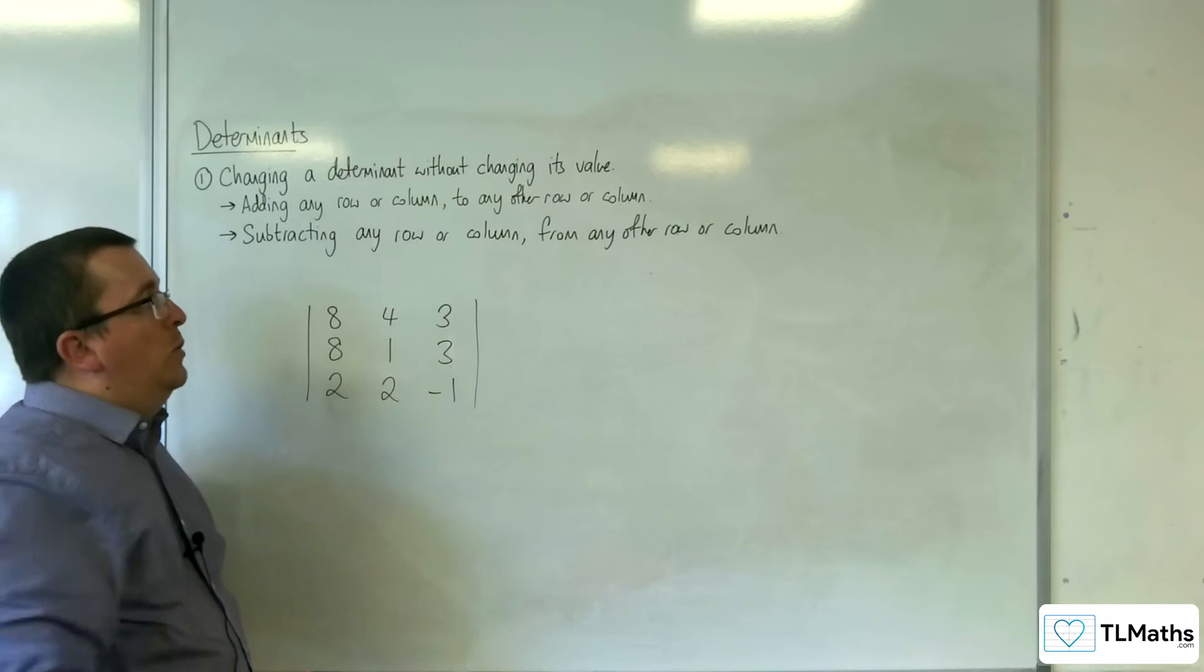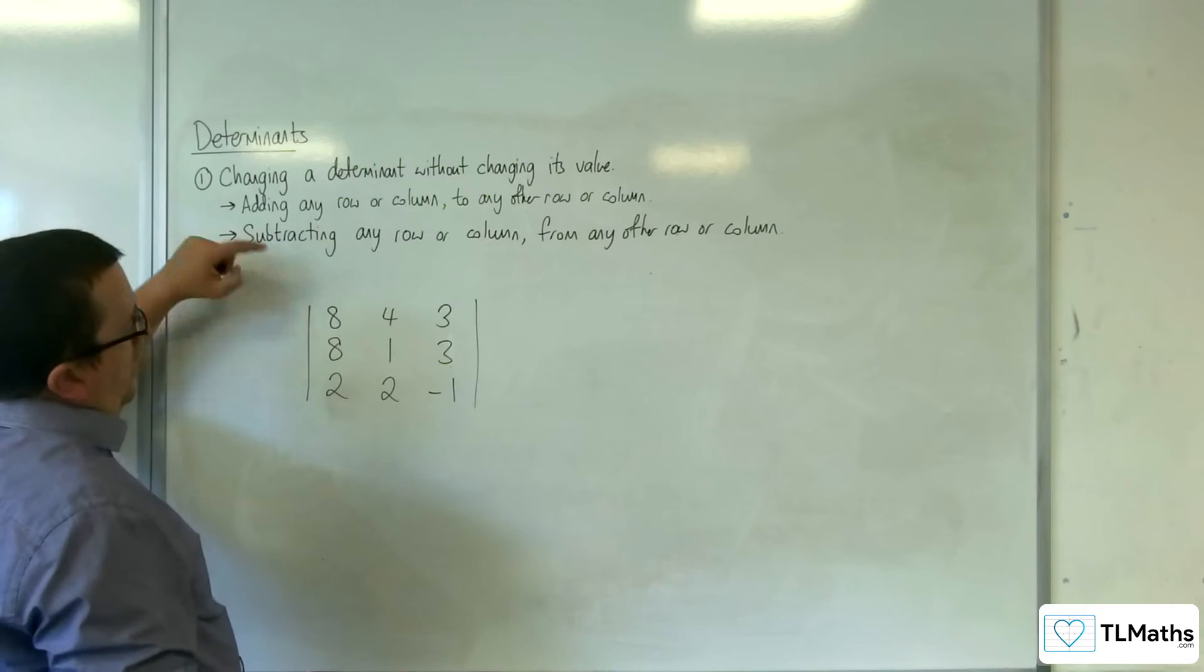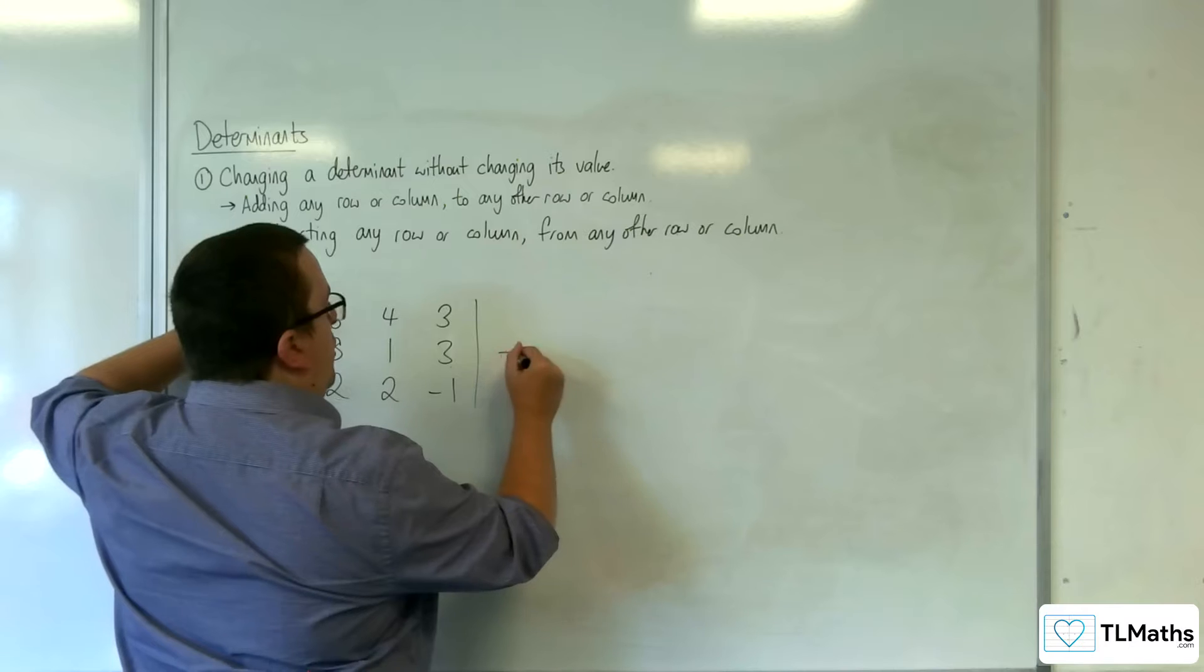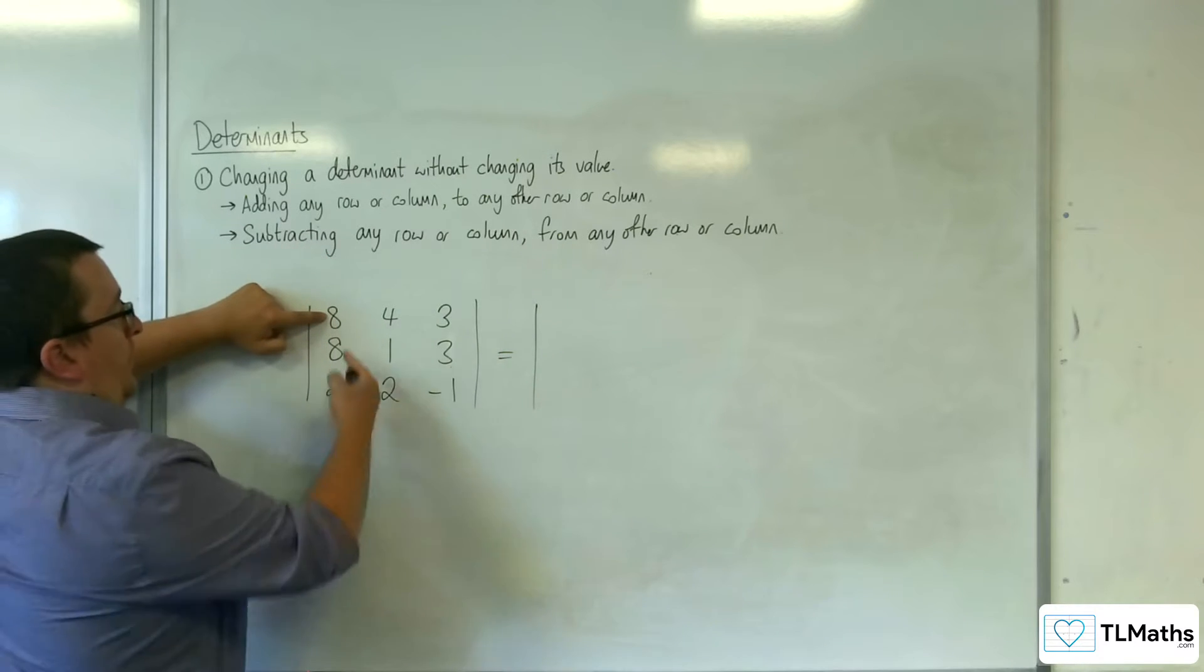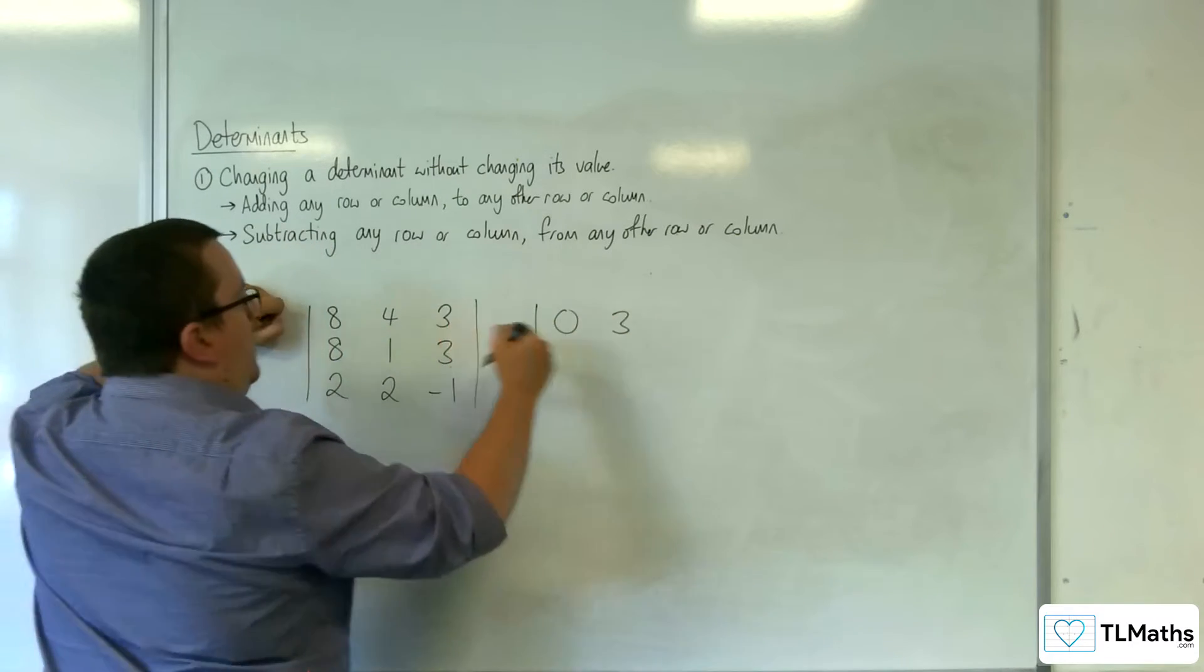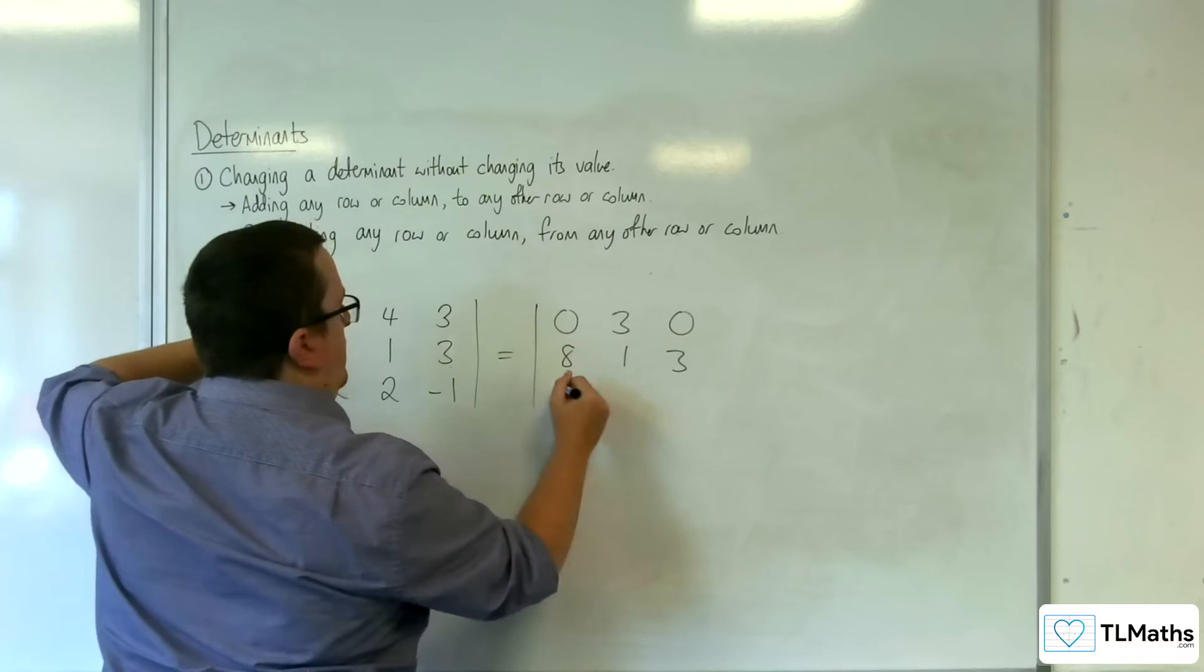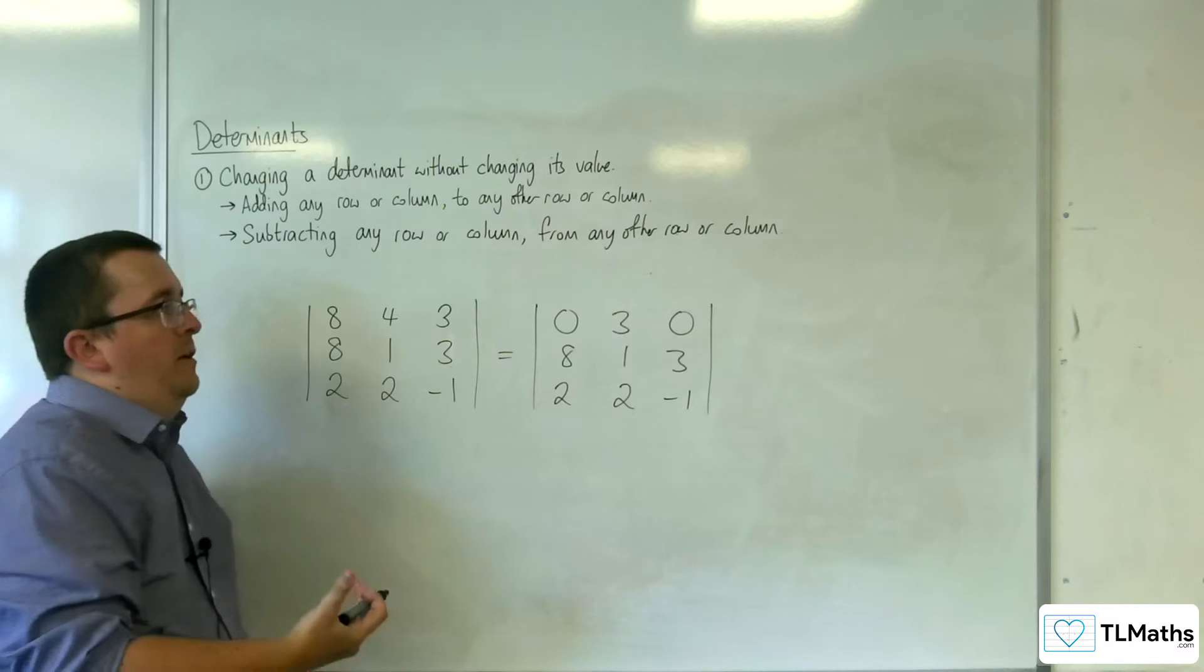Likewise, you can subtract any row or column from any other row or column. So you could do, for example, row 1 takeaway row 2. So the new row 1 is the old row 1 takeaway row 2. So 8 takeaway 8 is 0, 4 takeaway 1 is 3, 3 takeaway 3 is 0. And you've still got the 8, 1, 3, 2, 2 minus 1. And that will make finding the determinant a whole lot easier.